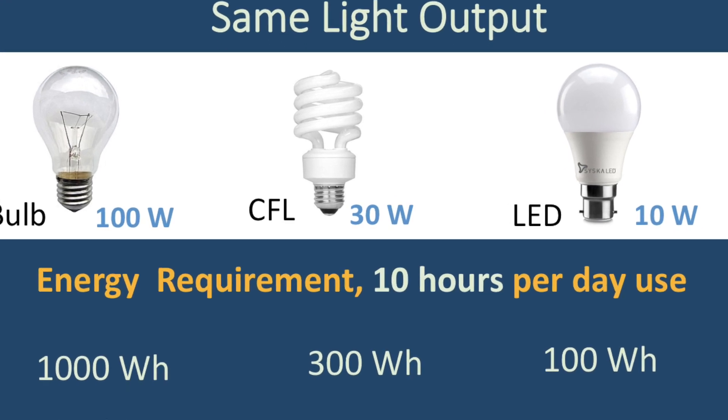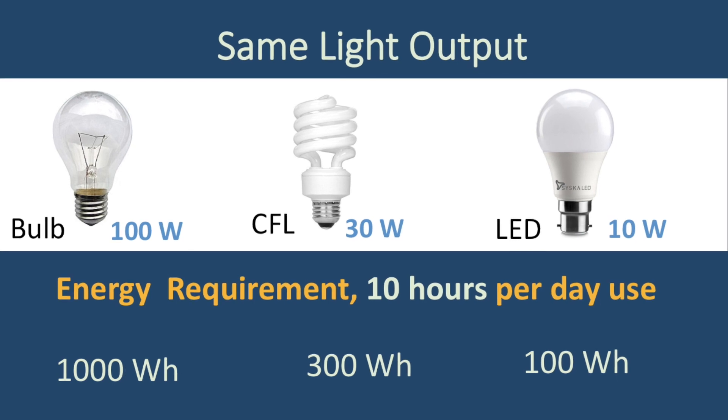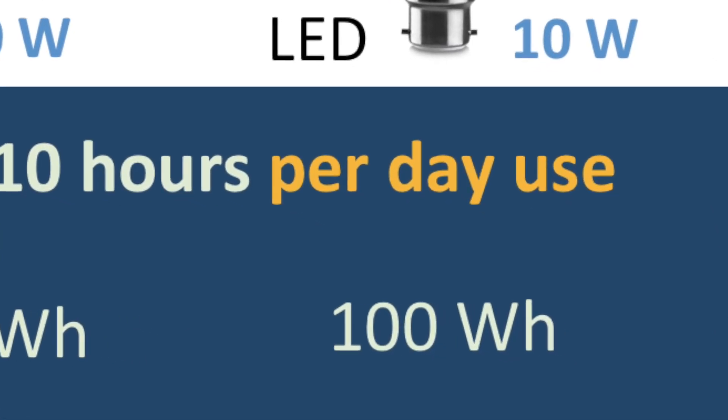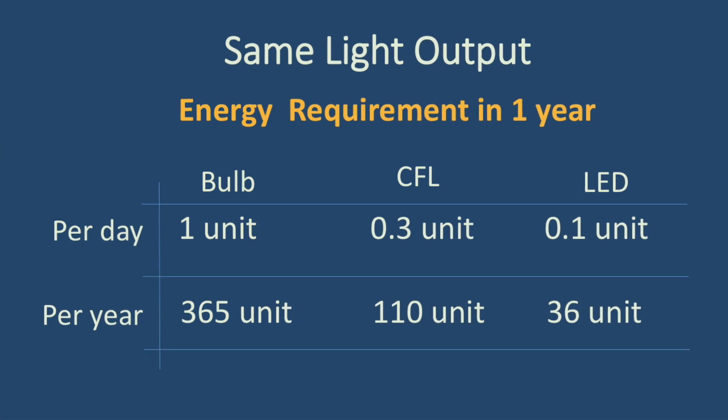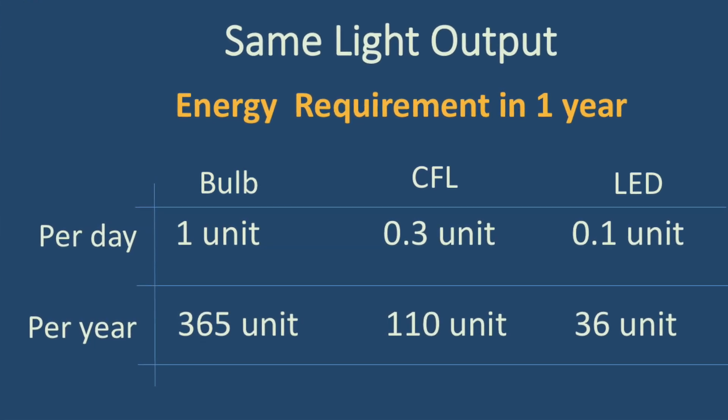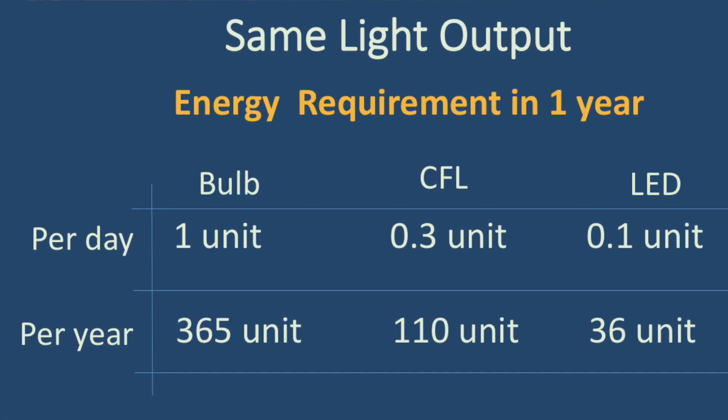The CFL at 30 watts used for 10 hours per day requires 300 watt-hours per day. The LED at 10 watts used for 10 hours per day consumes only 100 watt-hours per day. Looking at yearly electricity consumption: the incandescent bulb uses 365 units per year, the CFL uses 110 units per year, and the LED uses only 36 units per year. Now let us look at the total cost of operation, which is fixed cost plus running cost.